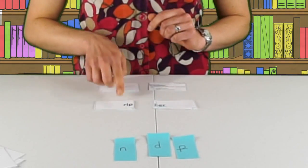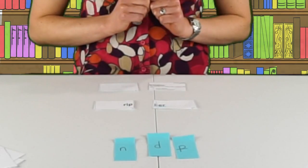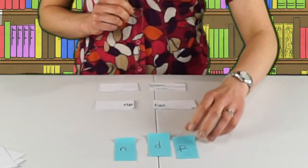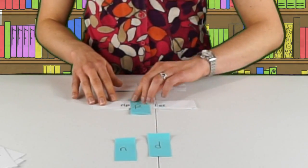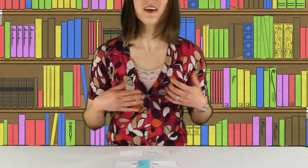Here we have 'rip' plus 'er.' It's going to follow the one-one-one doubling rule, so let's put our second consonant in there and we have 'ripper.' They'll go through and sort the piles like we just did so that everything follows the one-one-one doubling rule.